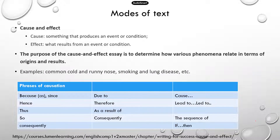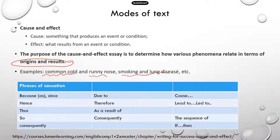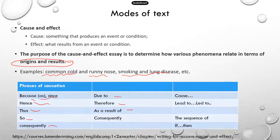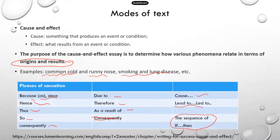For cause and effect — something produces an event, condition, or result. Examples include: a common cold causes a runny nose, or smoking and lung disease. Words and phrases that indicate causation include: because, since, hence, thus, so, consequently, due to, therefore, as a result of, cause, lead to, led to, the sequence of, and 'if/then.' Those last two phrases are from the official TEAS study manual, which I added to the table from Luma Learning.